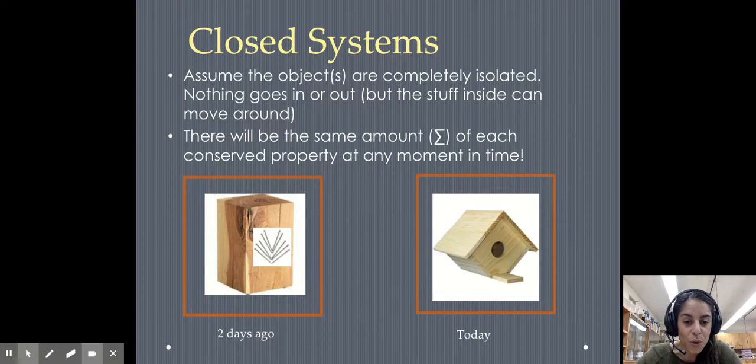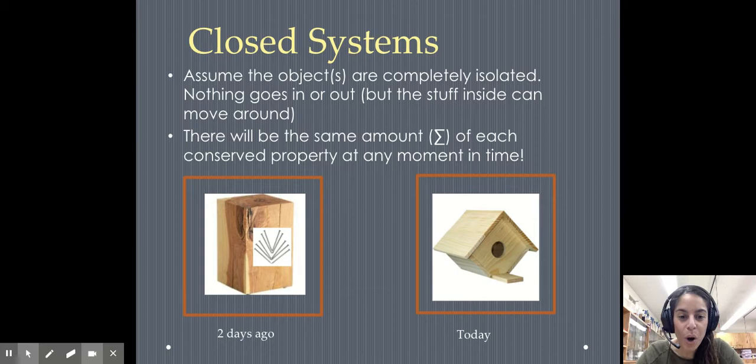Let's say we've got this wooden block and those in that little white box right there are nails. Let's say that was two days ago, closed system. Today we made it into a cute little birdhouse. Are the nails still there? Yep, they've been used in the process to create that birdhouse. Is that wood still there? Yeah. It's been cut up into different pieces so that it can create that birdhouse. So the amount of mass, the total mass or the sigma mass has stayed the same in this.